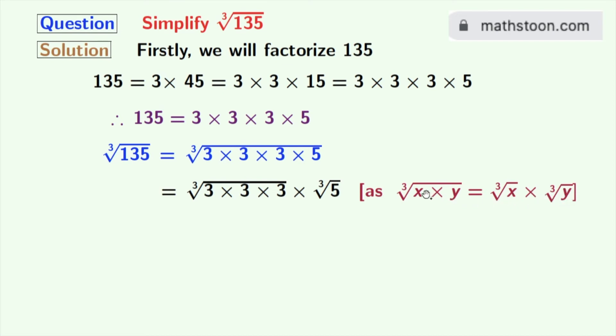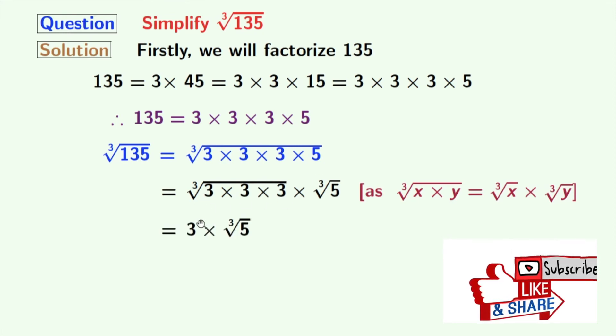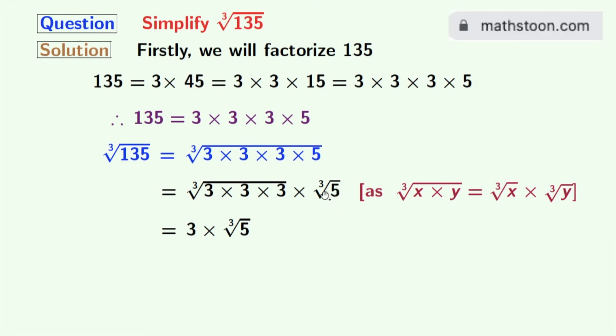Here, x is 3 times 3 times 3 and y is 5. Now from the first cube root, we get 3, and the second cube root, that is cube root of 5, remains the same. In the first cube root, we have used the rule that cube root of a times a times a equals a. Here, a is 3.